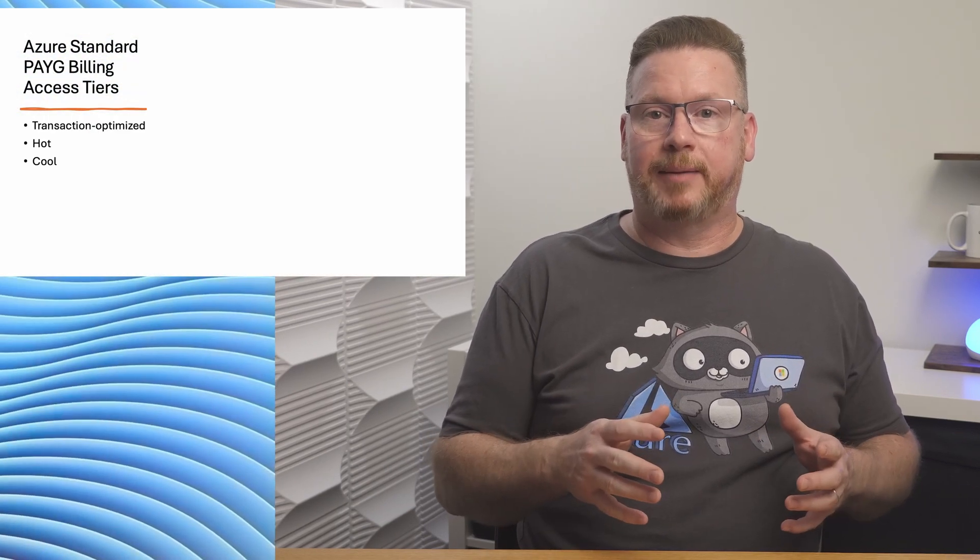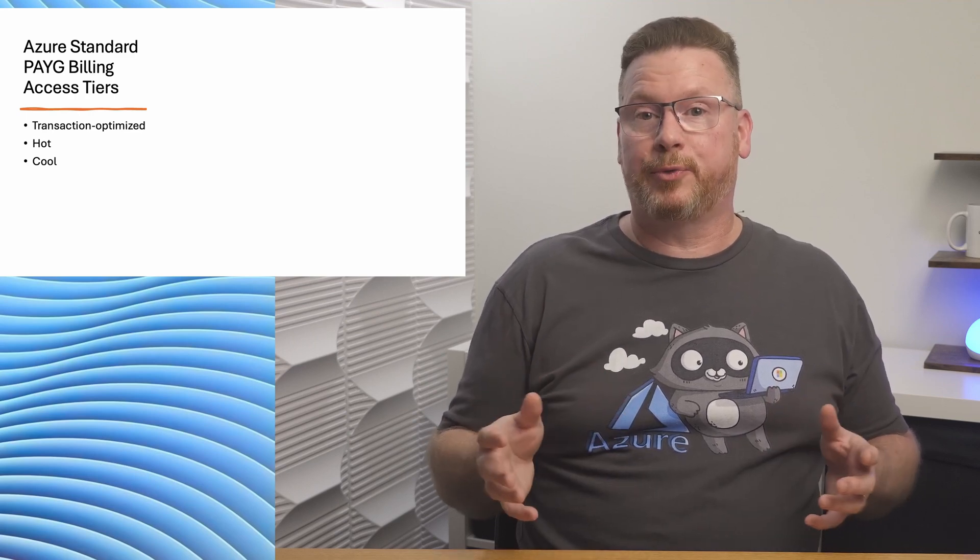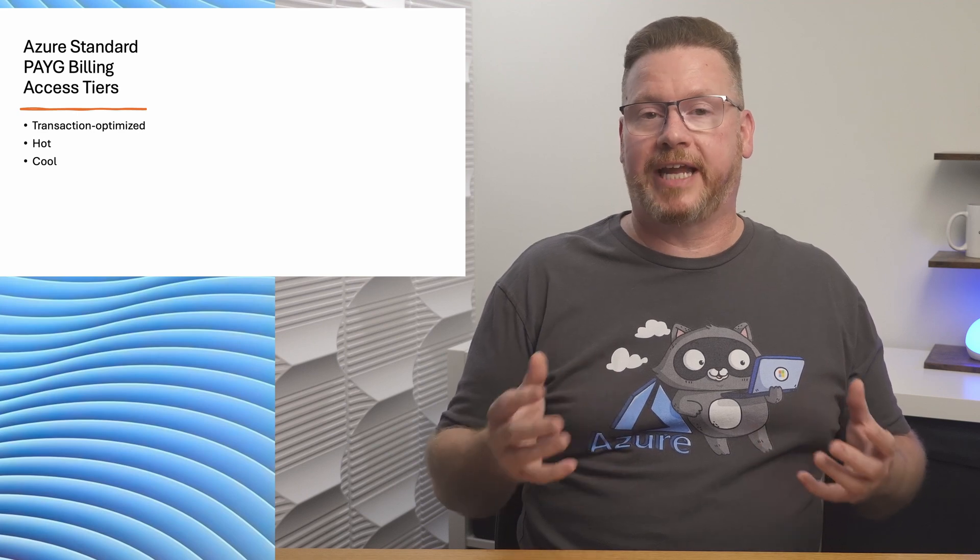Let's talk about Azure Files access tiers next, and what types of storage access tiers do not apply to. Tiers aren't available for Azure Files Premium, or Azure Files Standard with a provisioned v2 billing model. In both cases, a set amount of performance is allocated to the file shares based on capacity with premium, or file share properties with provisioned v2. Azure Files Standard with a pay-as-you-go billing model can be tiered, with three options: transaction optimized, hot, or cool. Performance — IOPS and throughput — are the same for all three; the only difference is the cost of data storage and transactions.